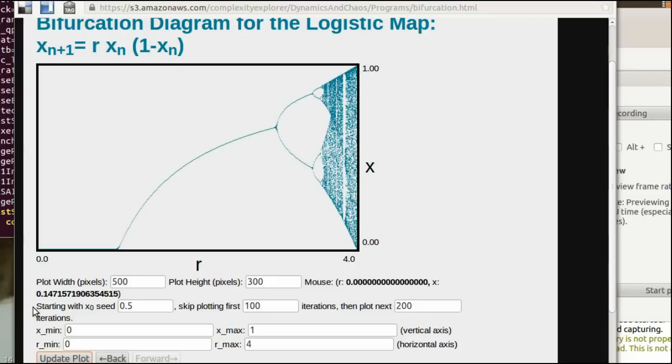Alright. So in order to make this bifurcation diagram, the program starts by iterating the seed 0.5. And the seed you put in doesn't really matter, but you can change it if you want to see if it looks different. And then it will iterate for 100. So we'll skip plotting the first 100, and then it will plot 200. And those are numbers that we can change, and we'll do that in later videos.